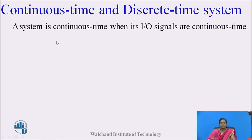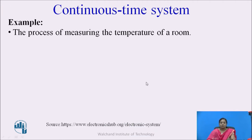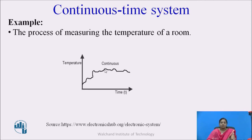A system is a continuous time system when its input and output signals are continuous time. For this type of system, the input signal x(t) is continuous and y(t) is also continuous — such systems are called continuous time systems. For example, a temperature monitoring system that measures the temperature of a room continuously is a continuous time system.